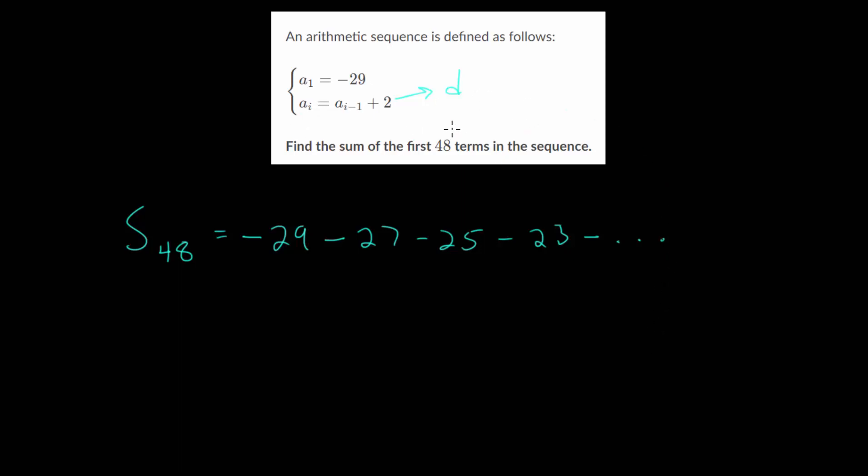So we need to figure out what the 48th term in the sequence will be. And for that, we're going to again use that explicit formula. So remember to find the nth term, we'll take the first term and add that common difference n minus 1 times.